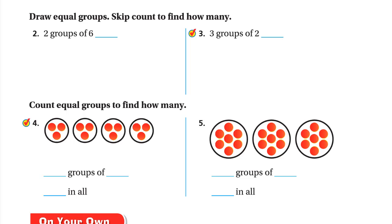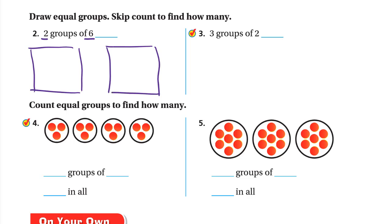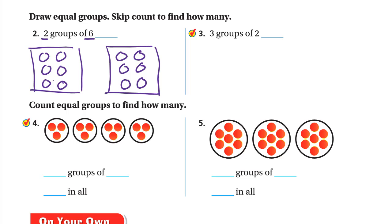Draw equal groups and skip count to find how many. Two groups of six: this is the first group and this is the second group. We draw six things in each group — one, two, three, four, five, six — and again one, two, three, four, five, six. Six and six is twelve.